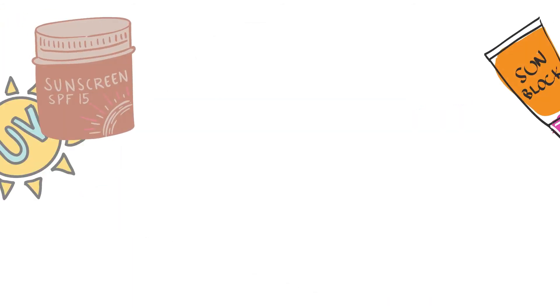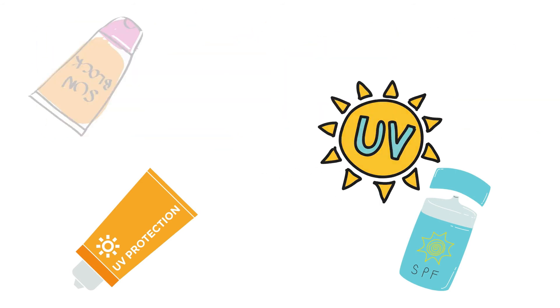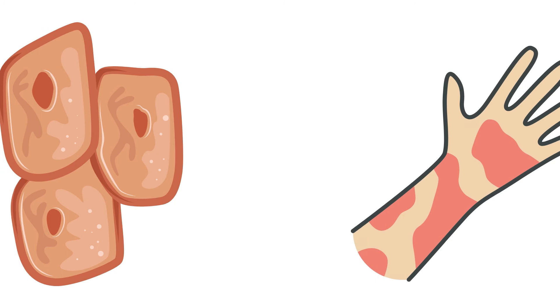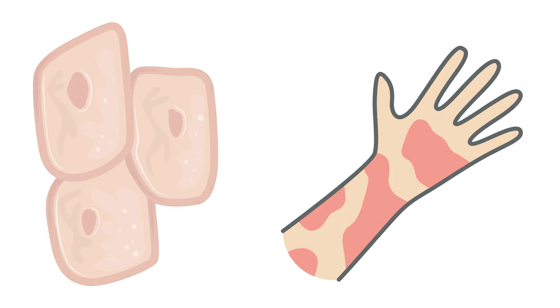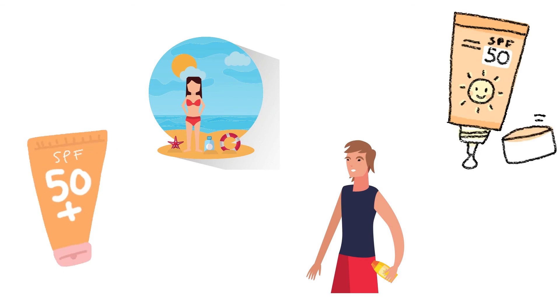Sunscreen is your best friend. Sun damage can result in early signs of aging. The rays of the sun can dehydrate your skin and cause it to look wrinkled and flaky. It can also contribute to age spots and sunspots, so wear a broad-spectrum sunscreen every time you step out during the day.